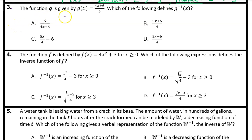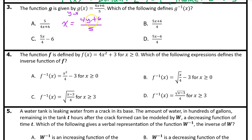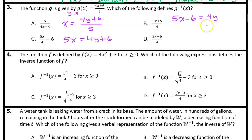Number 3: the function g is given by g of x equals 4x plus 6 divided by 5. Which of the following defines g inverse of x? g of x is another name for y. Switch x and y to get x equals 4y plus 6 divided by 5. Multiply both sides by 5: 5x equals 4y plus 6. Subtract 6: 5x minus 6 equals 4y. Divide by 4: y equals 5x minus 6 over 4. So the answer is D.